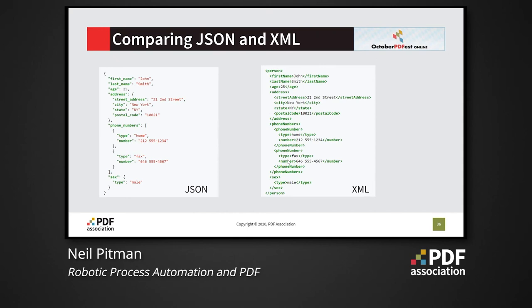Both JavaScript Object Notation and XML are good language-independent options for storing data in PDF as attached files. JSON is just a data format whereas XML is a full-blown markup language, so for the purposes of simple data exchange JSON provides a more lightweight solution. The decision of which format to use will perhaps primarily be made based on the technology stack in use by a particular organization.